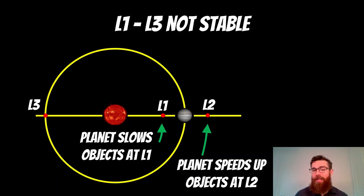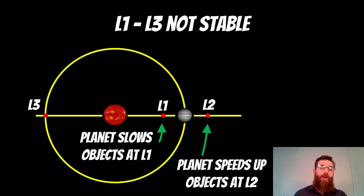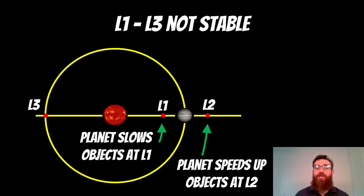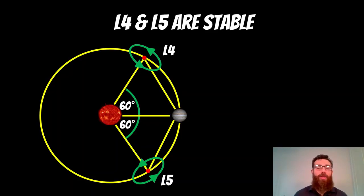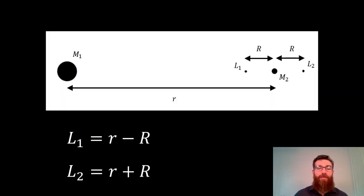The one we're interested in here is L1, but it's basically the same as L2 — just on the opposite side, so it's going to have a similar value. They're all in a line between the two larger objects: M1, which will be our Sun, and M2, which is Jupiter. The L4 and L5 points are stable, sitting about 60 degrees in front and behind on the orbit, but we're not interested in those for this video.